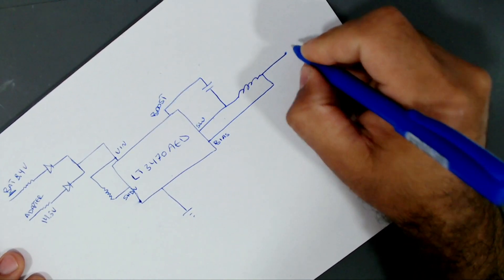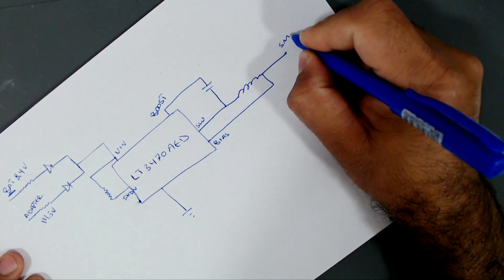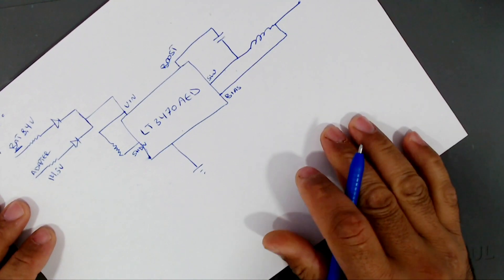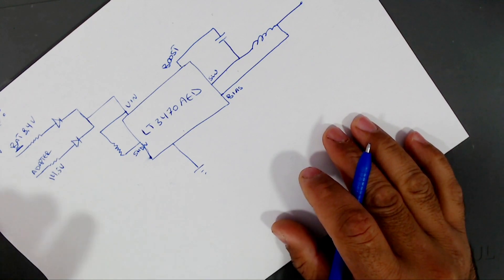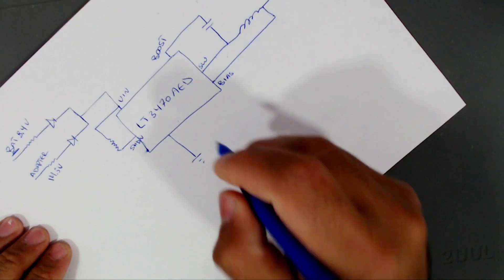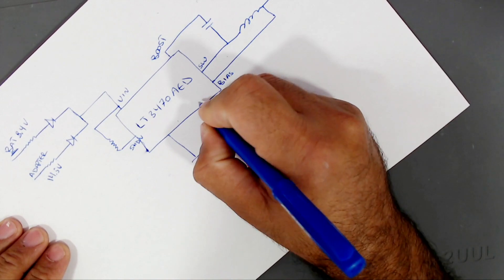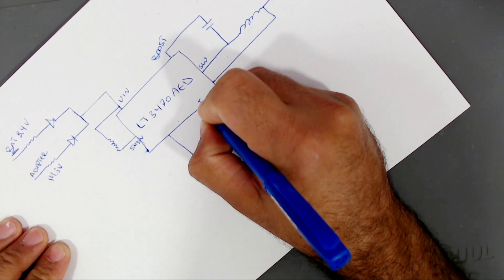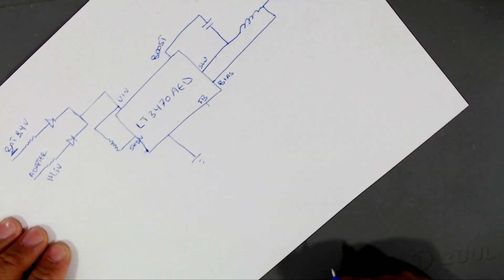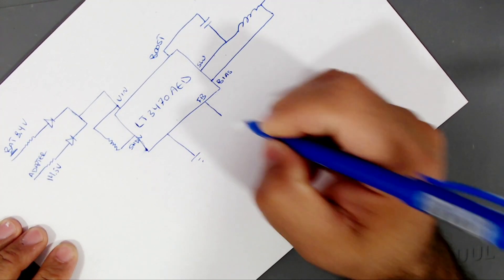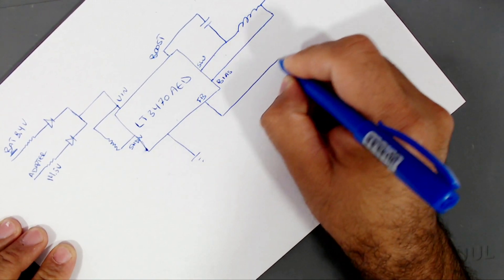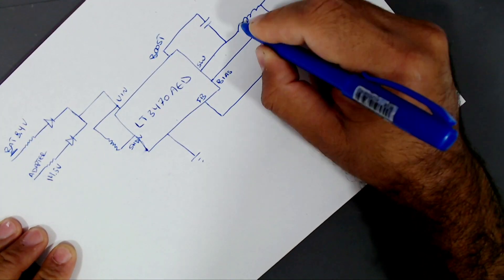We said this output goes to the SMC chip. We have also a pin called FB, which means feedback.